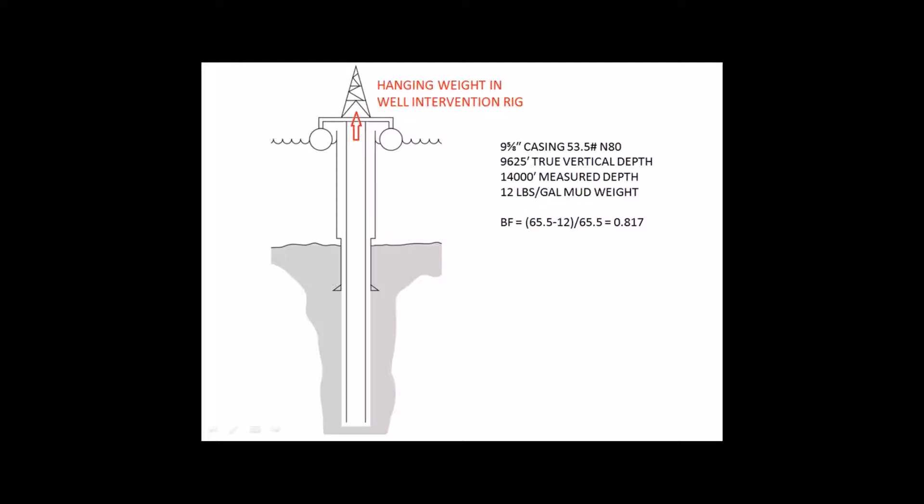Depicted is a production casing suspended by the drilling rig. On the drawing it is shown as a vertical well, but in reality the well is deviated and the angle of the well from the vertical is 70 degrees at the bottom. The density of steel is 65.5 pounds per gallon and the mud weight is 12 pounds per gallon. The corresponding buoyancy factor is 0.817.